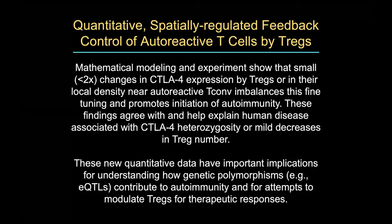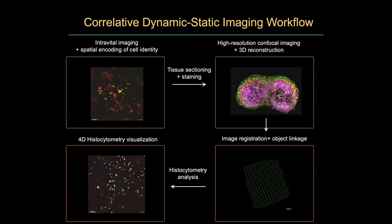These data completely agree with evidence that CTLA-4 heterozygotes in humans have autoimmune disease, and that small decreases in Tregs drive autoimmunity. This has very important implications for understanding how genetic polymorphisms, like eQTLs, contribute to autoimmunity, and also for attempts to modulate Tregs. You're sitting on a knife edge where if you activate the Tregs too much, you begin to suppress useful immune responses, and if you allow IL-2 to access the potentially autoreactive cells, they can escape the regulatory phenomenon — which is why it's been rather difficult to tune IL-2 treatments to give you the desired results.